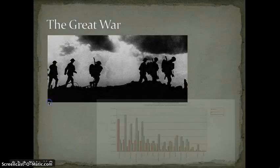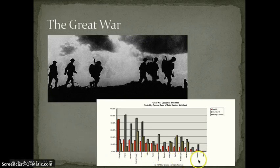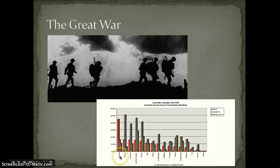It was called the Great War. And you can see from this illustration how catastrophic and devastating it really was and how many nations were involved. You can see Japan, Germany, Austria-Hungary, Italy, Turkey, Russia, Great Britain, and eventually the United States entered the war as well.